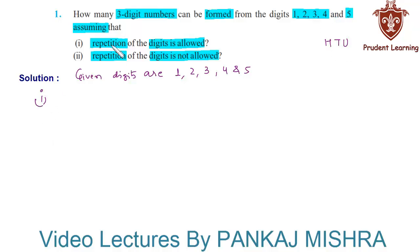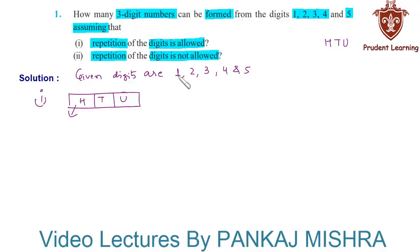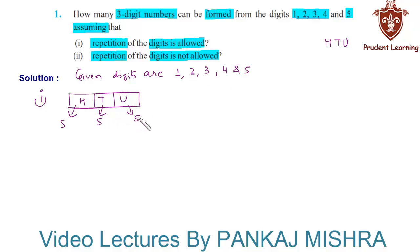For the first section, repetition of the digits is allowed. Let us draw three boxes each for units place, tens place and hundreds place. The hundreds place can be occupied by any one of the five digits in five different ways. Since repetition is allowed, the tens place can also be occupied by any one of the five digits in five different ways, and similarly the units place can also be occupied by any one of the five digits in five different ways.